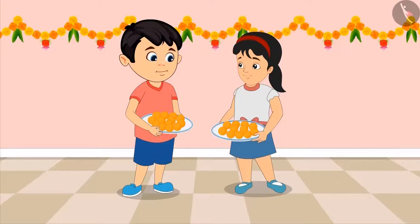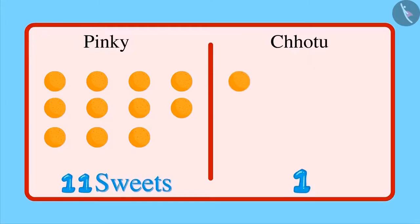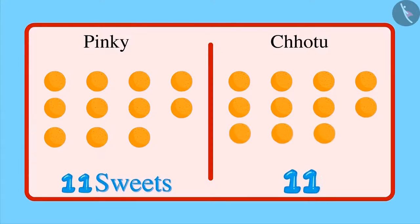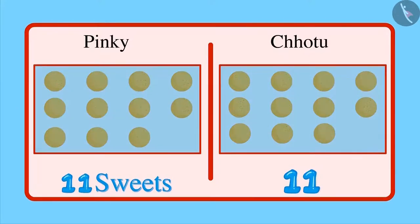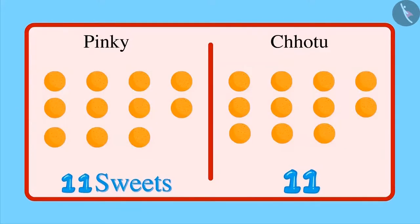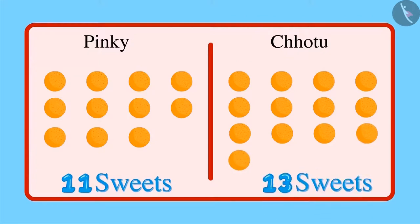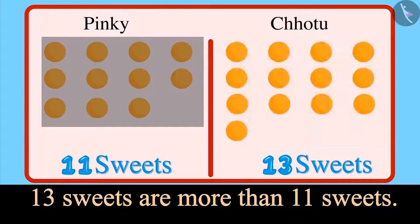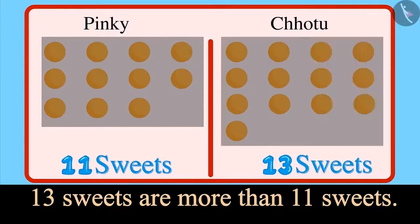Okay Chotu, now you count the number of sweets in your plate. Counting: 1, 2, 3, 4, 5, 6, 7, 8, 9, 10, 11 — that's equal to Pinky's count — but there are more: 12 and 13 sweets. That means 13 sweets are more than 11 sweets, so Chotu has more sweets in his plate.